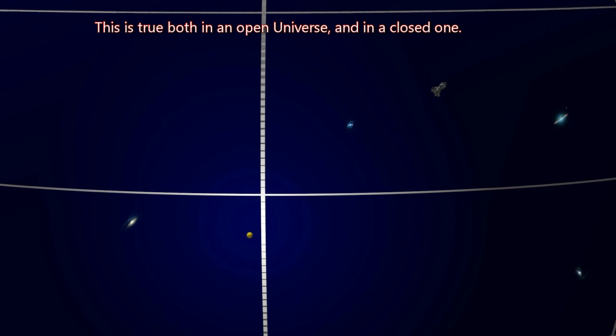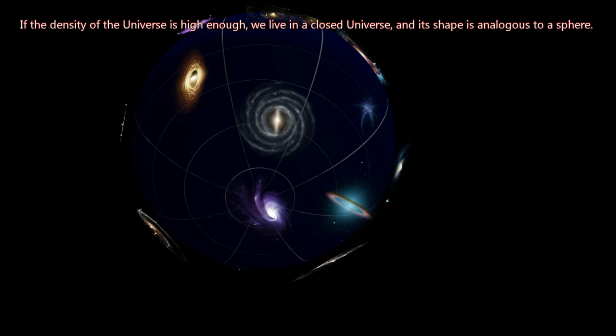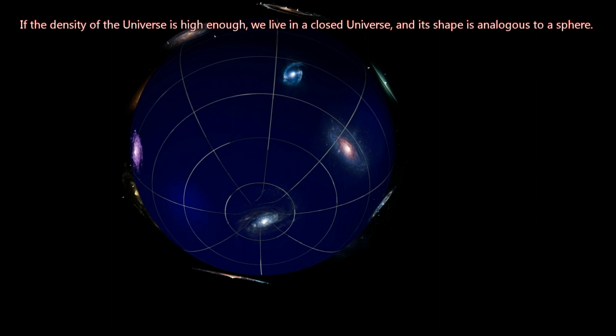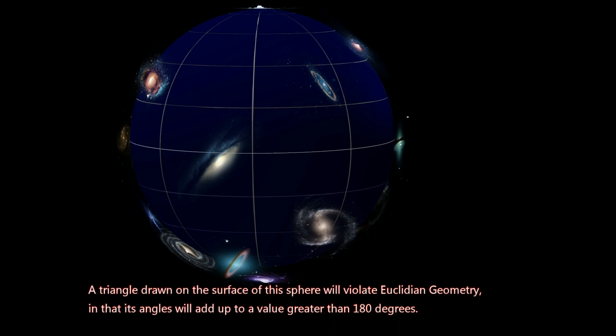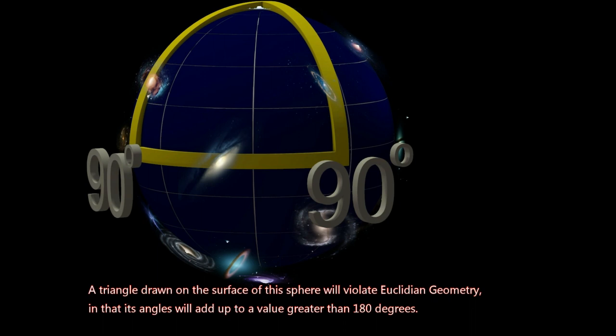If the density of the universe is high enough, we live in a closed universe, and its shape is analogous to a sphere. A triangle drawn on the surface of this sphere will violate Euclidean geometry, in that its angles will add up to a value greater than 180 degrees.